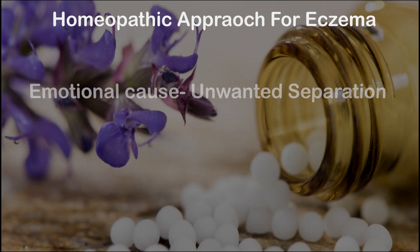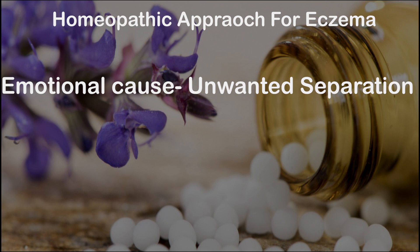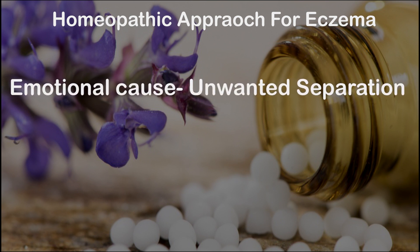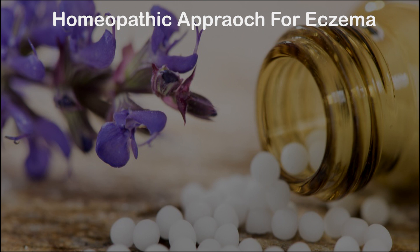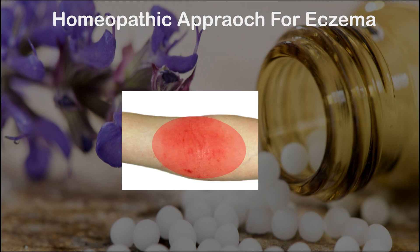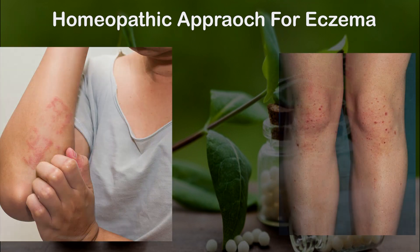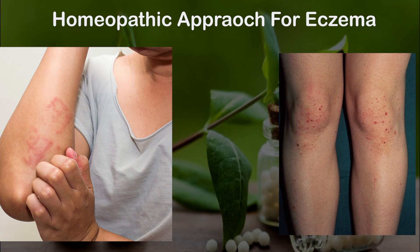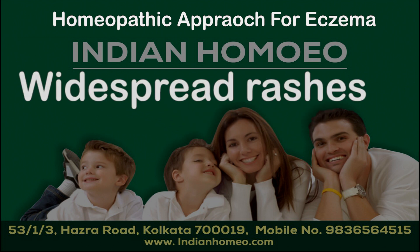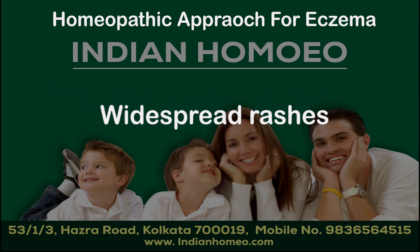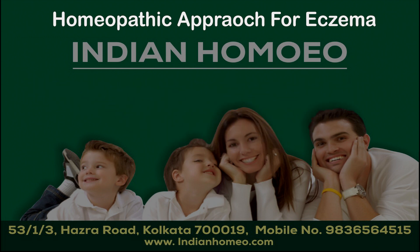Another emotional cause considered in eczema is unwanted separation. That is, if the patient is not being able or allowed to hold a beloved person or a pet, the eruptions will be seen on the inside of the arms, hands, fingers, or legs. While if a person wants to separate from someone, the eruptions are seen on the outside of the arms, hands, elbows, legs, and fingers. When we see widespread skin rashes — that is, inflammation all over the body — it represents a generalized separation by a person as a whole.